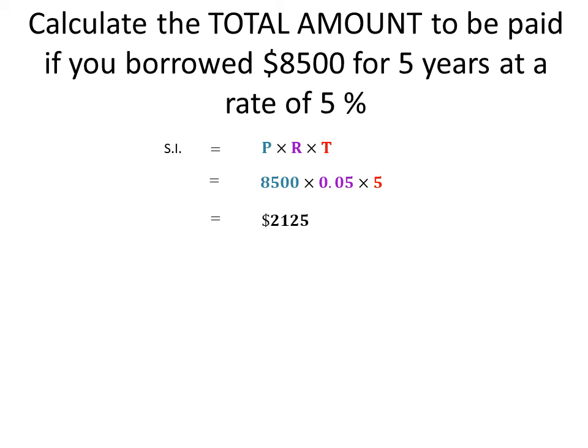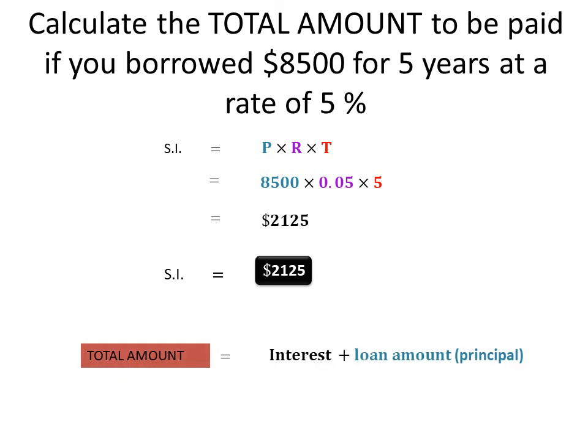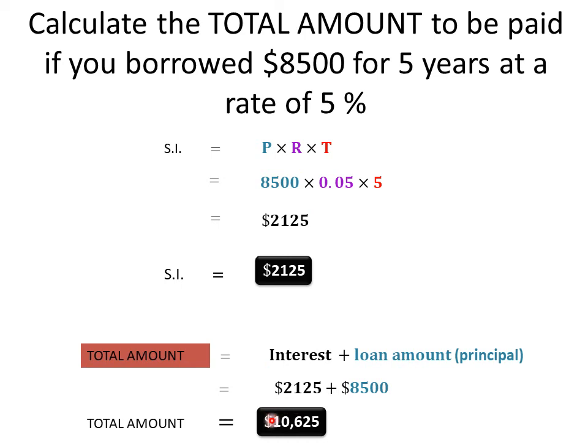You're going to repay the amount you borrowed plus the interest. The total amount equals the interest plus the principal — add them together and that's the total. So in all, you're going to repay ten thousand six hundred and twenty-five dollars. You borrowed eight thousand five hundred, but you're paying back ten thousand six hundred and twenty-five. You see how important it is to save — sometimes it's better to save your money instead of taking out a loan.